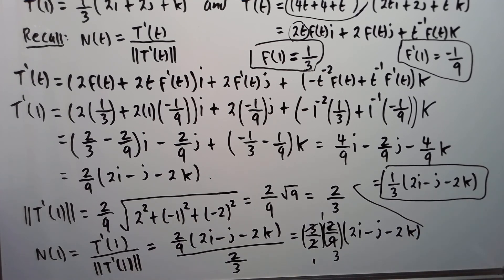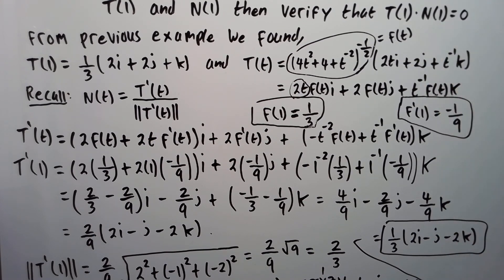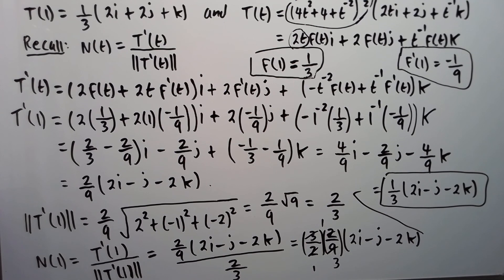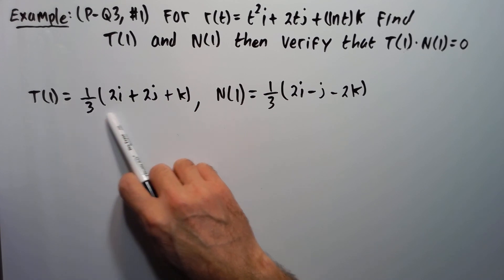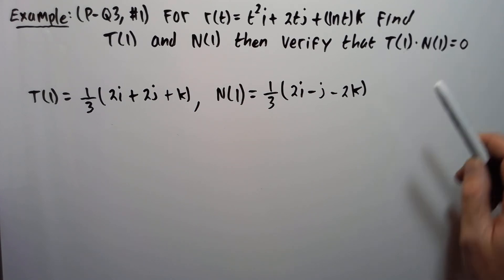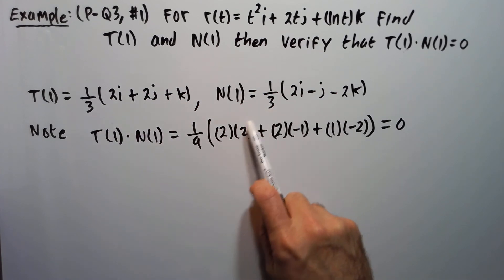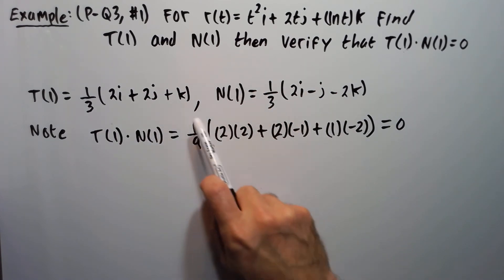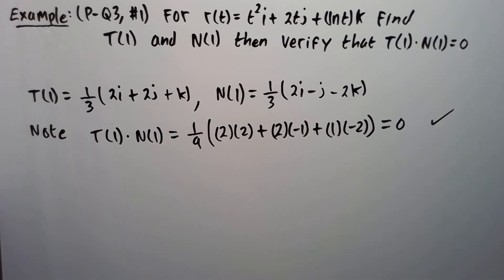Now we need to show that the dot product of T of 1 and N of 1 is 0. Summarizing: capital T of 1 is one third times 2i plus 2j plus k, and capital N of 1 is one third times 2i minus j minus 2k. Dotting them: one third times one third is one ninth. Then 2 times 2 gives 4, 2 times minus 1 gives minus 2, and 1 times minus 2 gives minus 2. That's 4 minus 2 minus 2 equals 0. It checks out. So we're done with this example.